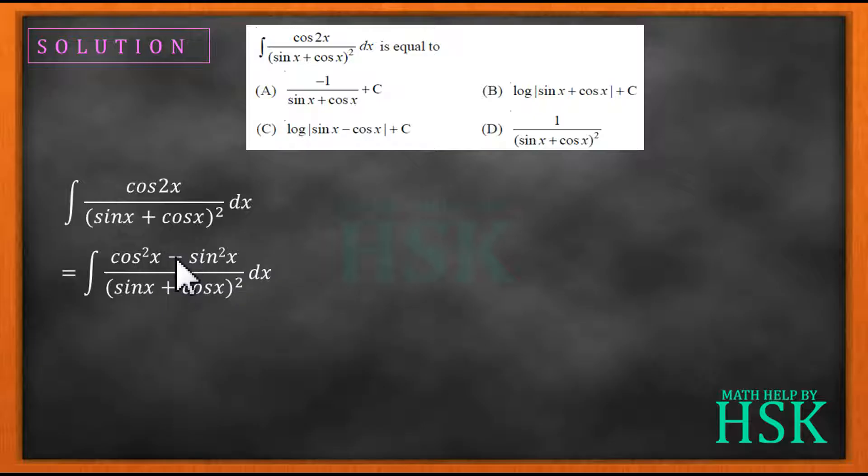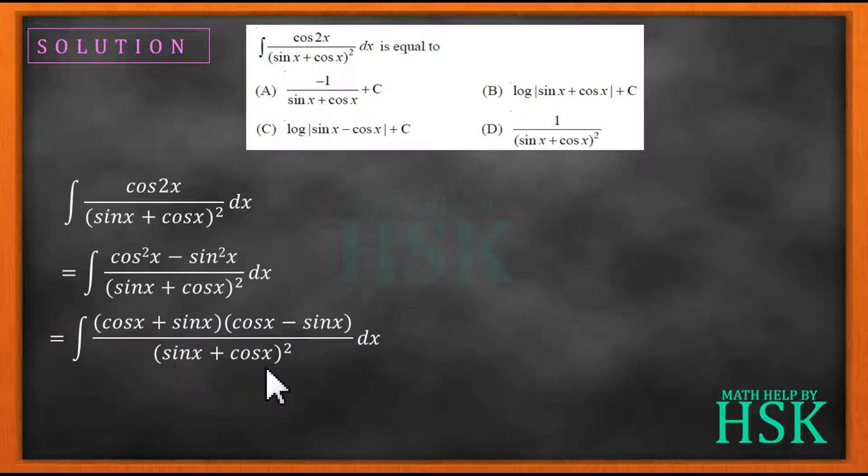Further I'm going to factorize the term in the numerator and this can be written as cos x plus sine x into cos x minus sine x upon sine x plus cos x whole square dx. This cos x plus sine x and cos x plus sine x are going to cancel out, one power would be reduced.